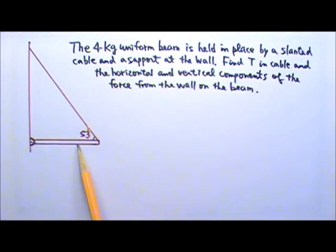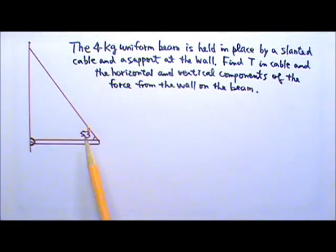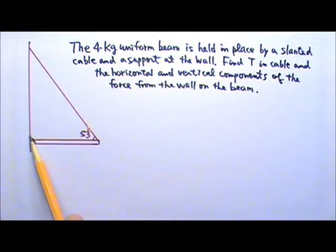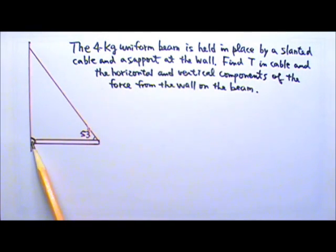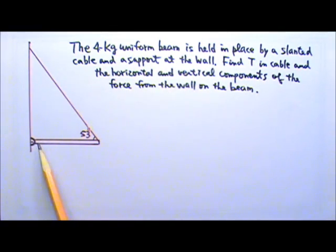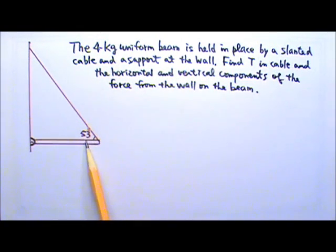A 4 kg uniform beam is held in place by a cable and a support at the wall. Find the tension in the cable and the horizontal and vertical component of the force from the wall on the beam. This angle here is 53 degrees.